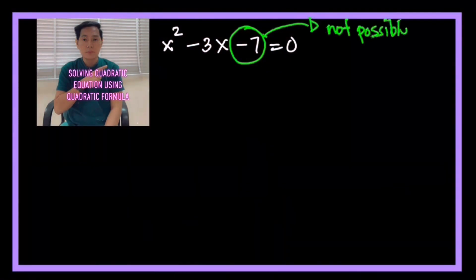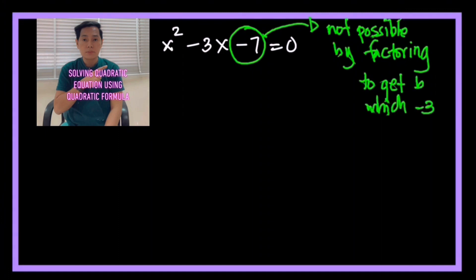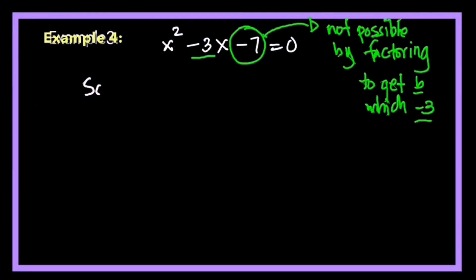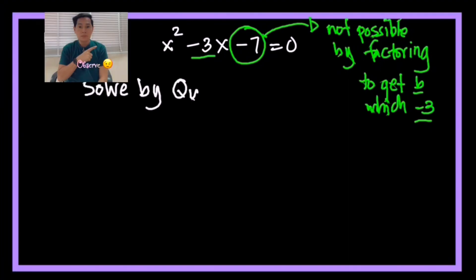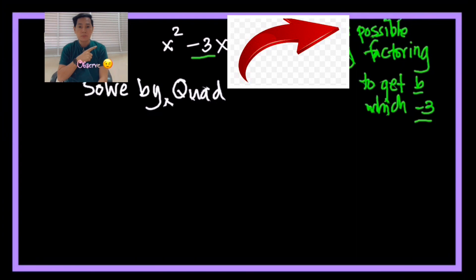I have here a quadratic equation which is x² - 3x - 7 = 0 and I wrote here not possible by factoring. The c here is negative 7 and if you're going to think of the factors, we have only 1 and 7 and it's not possible for us to get negative 3, which is the b that is our target there for us to do the factoring. In that case, the best way to solve this problem is using quadratic formula.